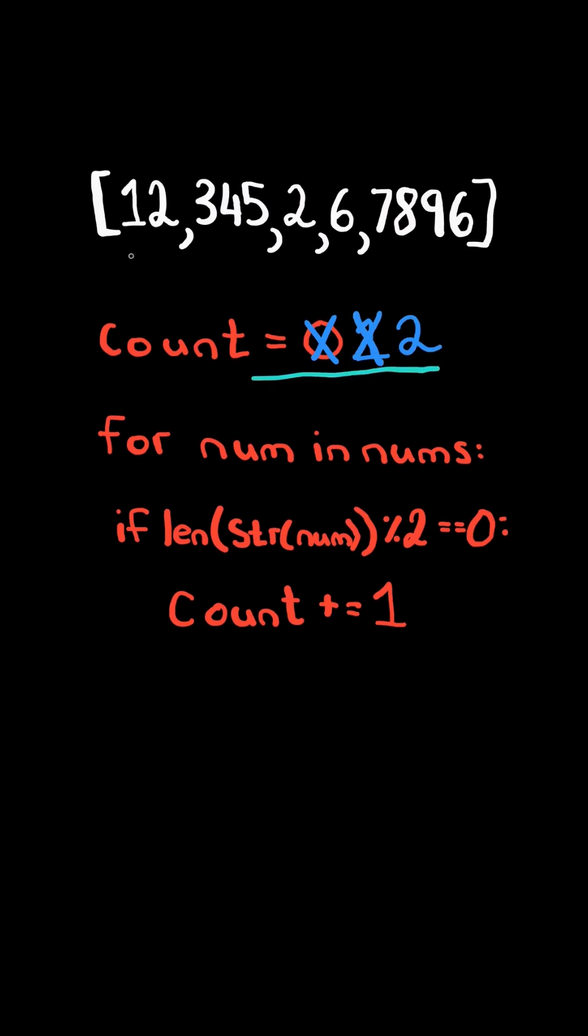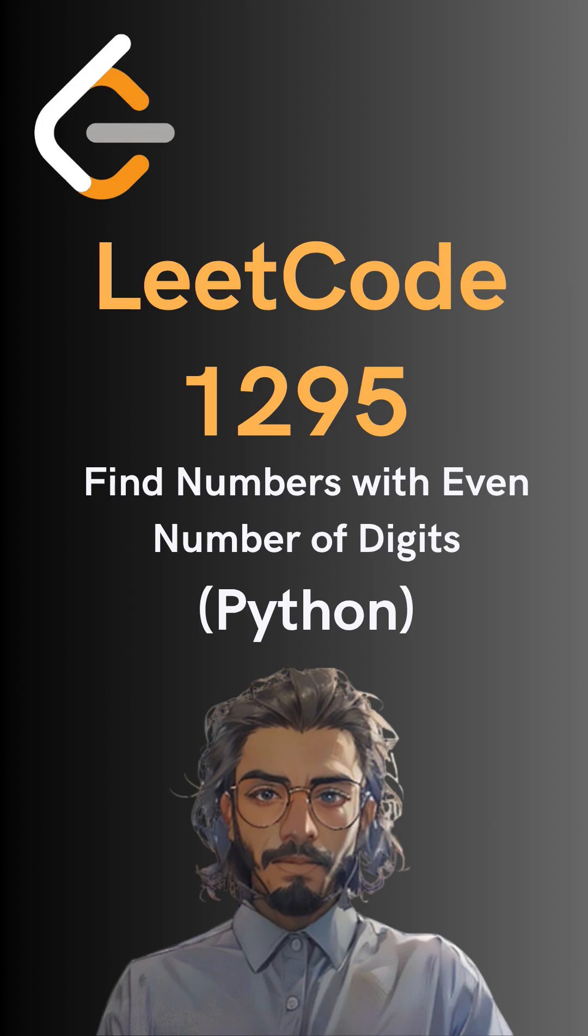At the end, count will have how many numbers contain even digits. And so we return the count. And here's the code to do so. Please like and follow for more.